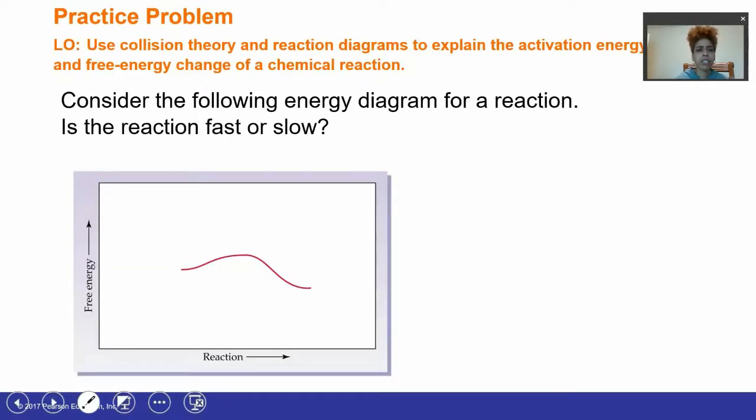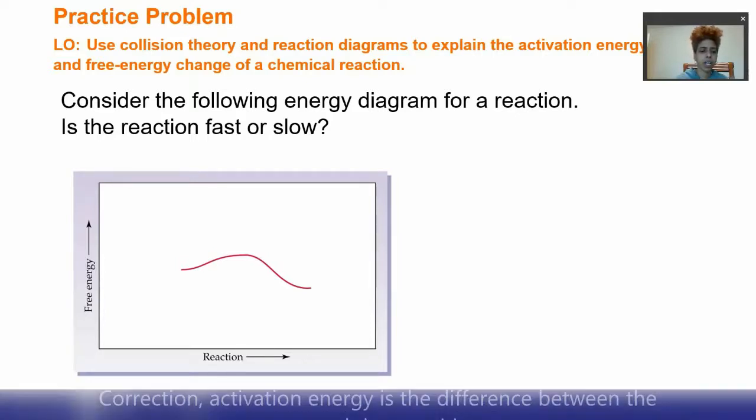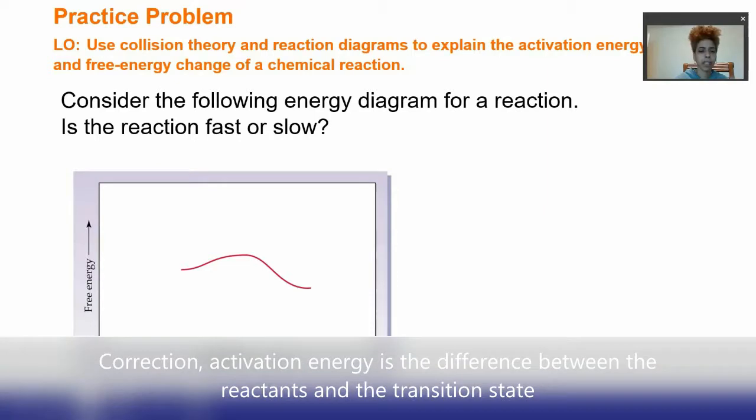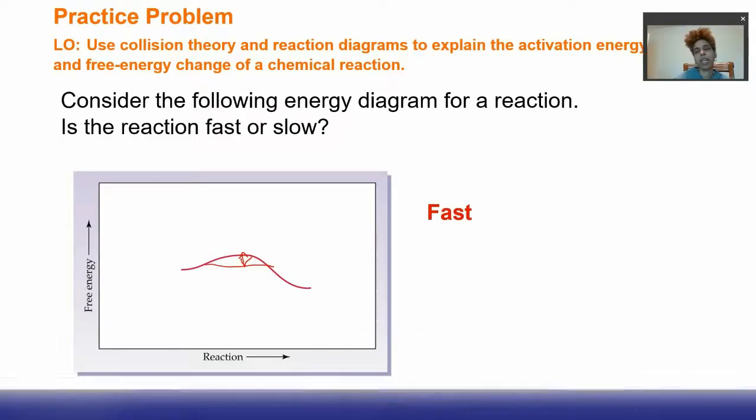So let's do some practice. Let's take a look at the energy diagram below. This is our free energy diagram. Delta G is on our Y axis. Is this going to be fast or slow? Well, it's going to be a fast reaction because the activation energy is low. Remember, the activation energy is the difference between our reactants and our products. So we have a fast reaction for this example.